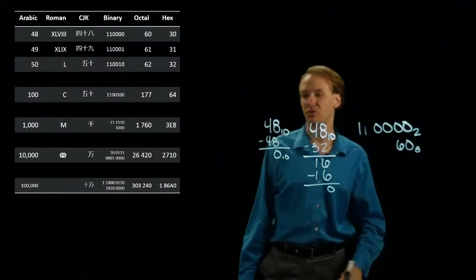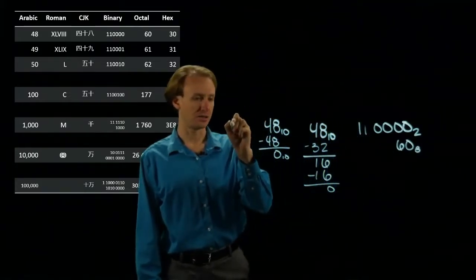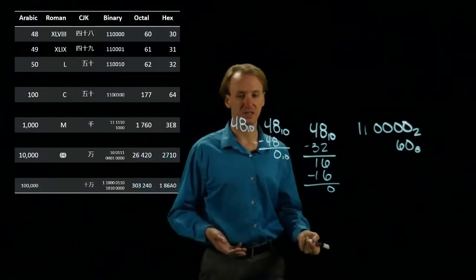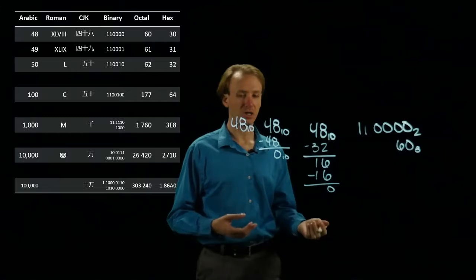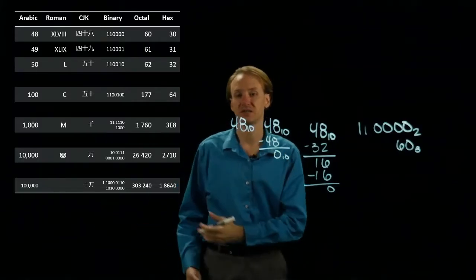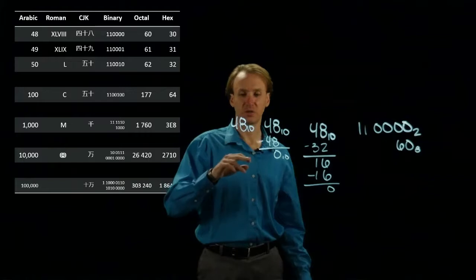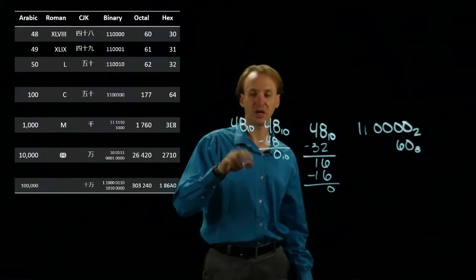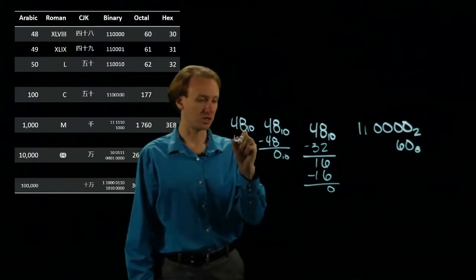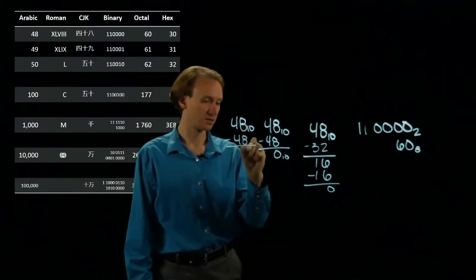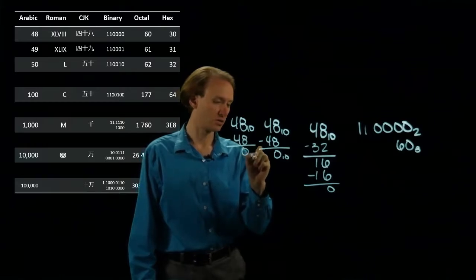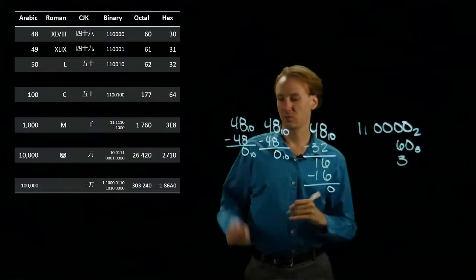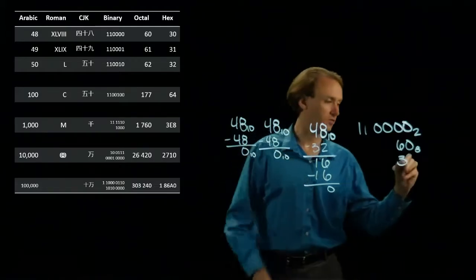The last one is hexadecimal. And here I'm looking for powers of 16. So I have 1, 16, and 256. So I'm going to have to make do with multiples of 16, and 3 times 16 will give me 48. So again, I'll subtract 48. I'll be left with zero. So I'd write down the 3 in hexadecimal, and then 0 for the ones position.